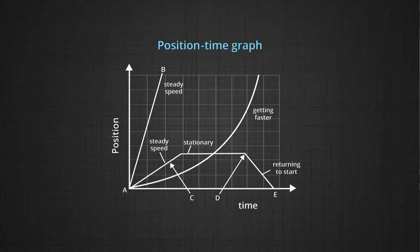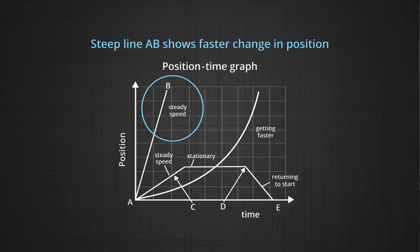Let us see section by section what the position time graph can tell us. Looking at segment A–B, the steepness of this straight line shows that the position is changing very fast. This is faster than the straight line section marked as C or the straight line section marked from D to E.